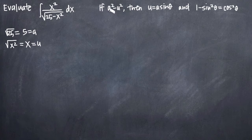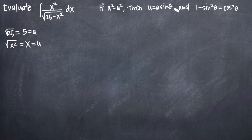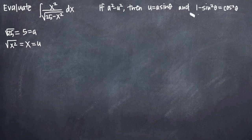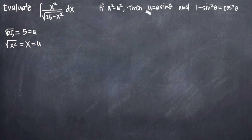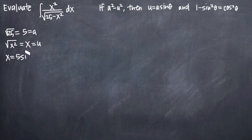When we identify the form a squared minus u squared in our function, we know that we'll be using the substitution u equals a sine theta, and the identity 1 minus sine squared theta equals cosine squared theta. So our next step is plugging our values for u and a into our substitution u equals a sine theta. When we plug those in, we get x equals 5 sine theta. And this is the beginning of our trigonometric substitution setup.